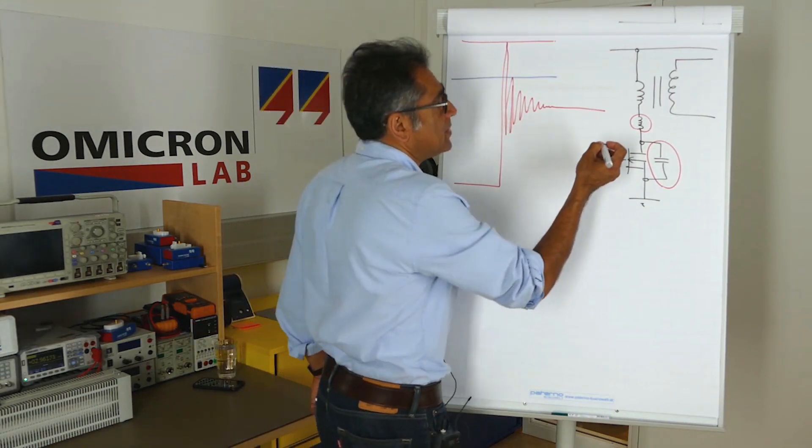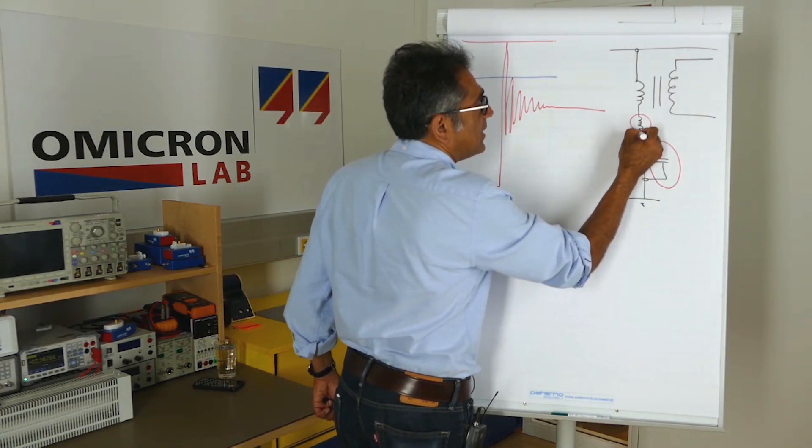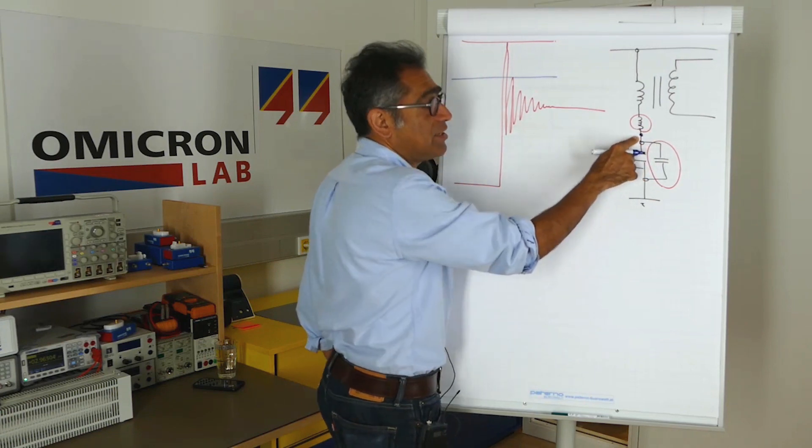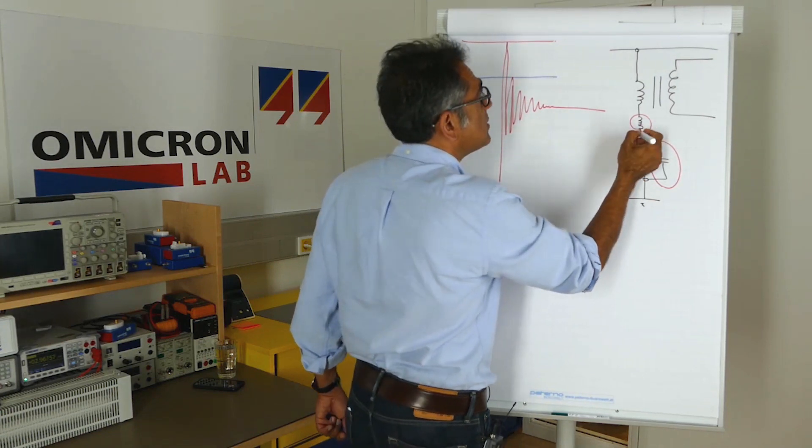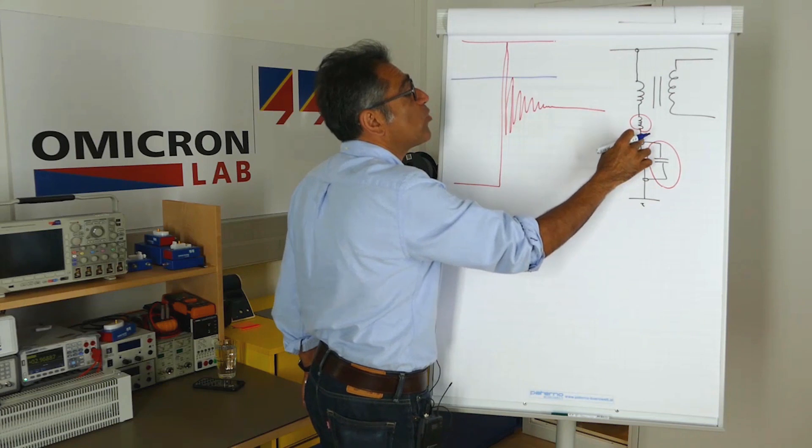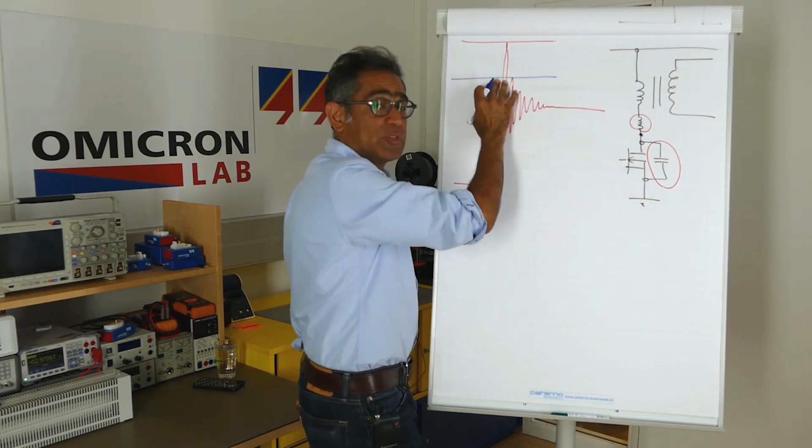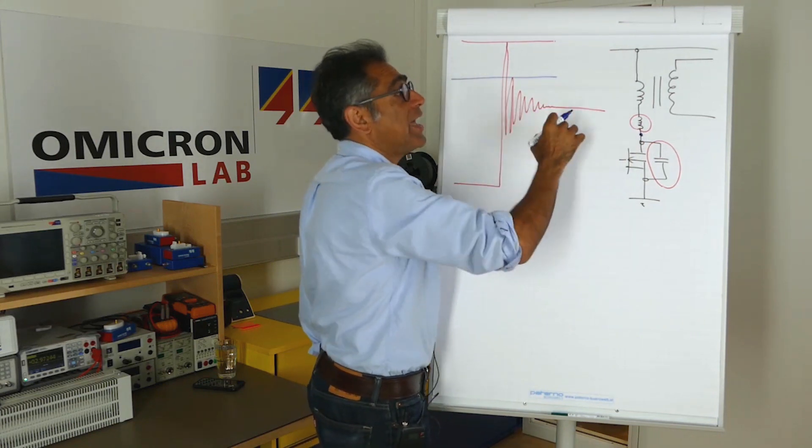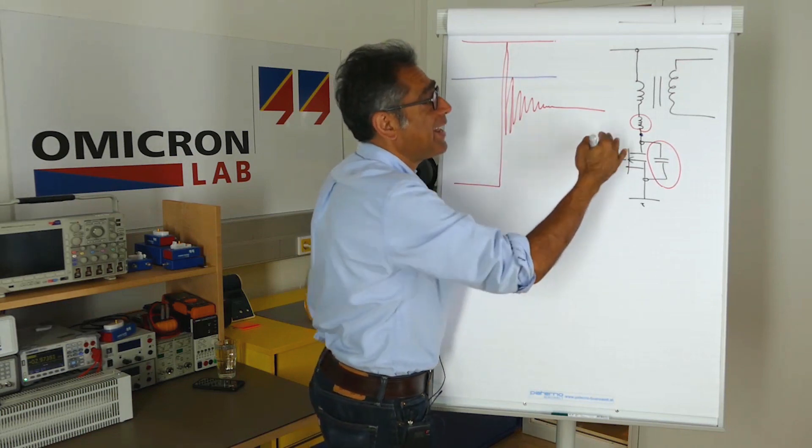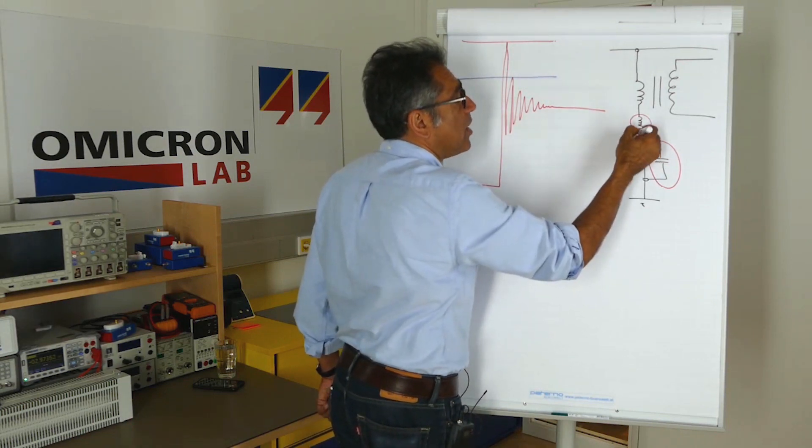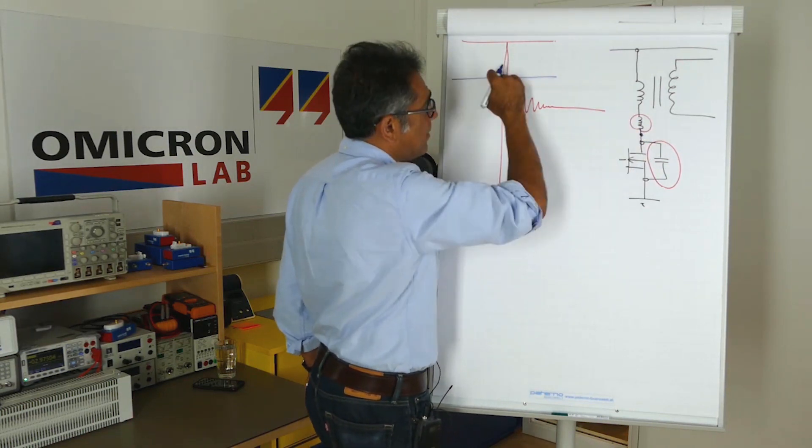Now what happens is at turn-off, the potential at this point starts increasing and we design a circuit so that when it approaches a certain value, as we'll talk about a little bit later, a diode turns on and allows a different path for the current to flow and therefore clamps this voltage.